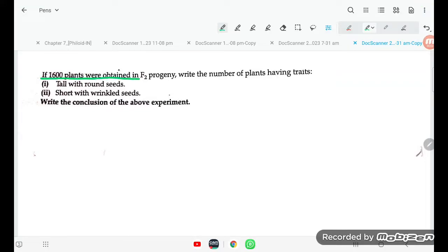If 1600 plants were obtained in F2 progeny, write the number of plants having tall with round seed.